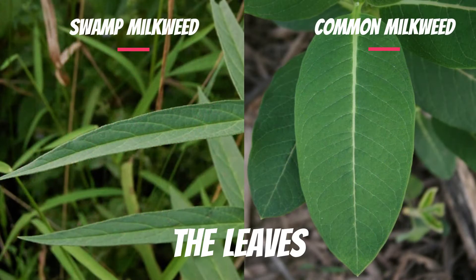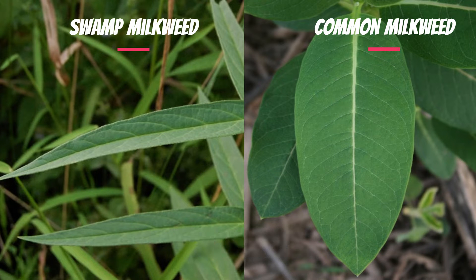The next difference is that swamp milkweed have narrow and pointed leaves that are glabrous, whereas common milkweed leaves are longer and larger and their tip is more round. The vein pattern of the two species is also different.